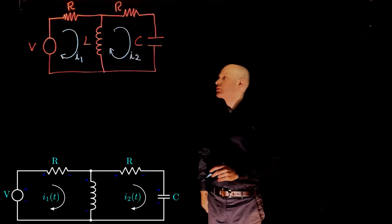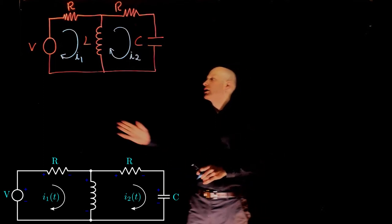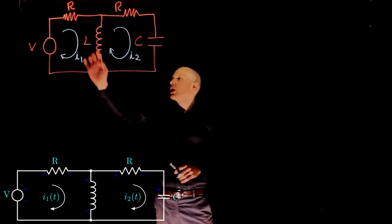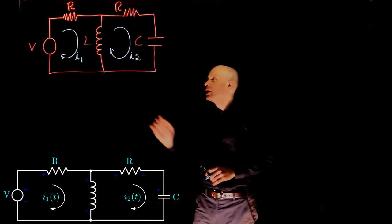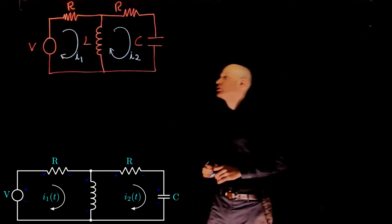Starting with the first loop, we know again that the sum of the voltage drop across L and across R, across the resistor and the inductor equals the input voltage V.